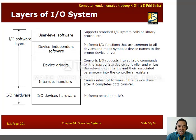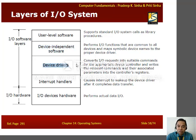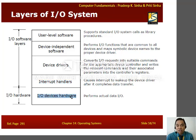The layers of the I/O system include: user-level software, which supports standard I/O system calls as library procedures; device-independent software, which performs I/O functions common to all devices and maps symbolic device names to the proper device driver; device drivers, which convert I/O requests into suitable commands for the appropriate device controller and write commands and parameters into the controller's registers; interrupt handlers, which wake up the device driver after data transfer completes; and I/O devices hardware, which performs the actual data input and output.